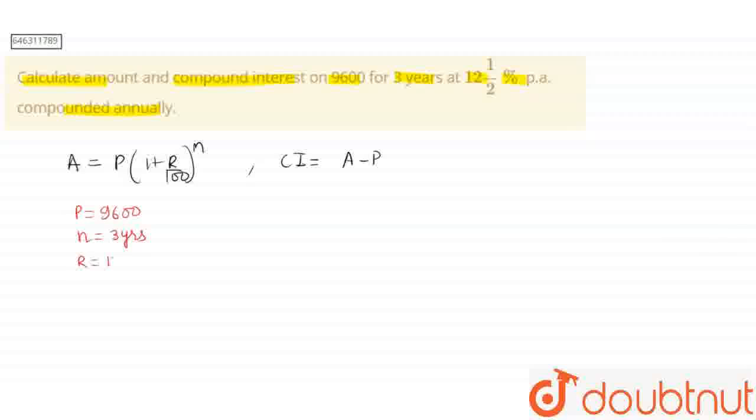The rate is given as 12.5%, which can be written as 25/2% per annum.